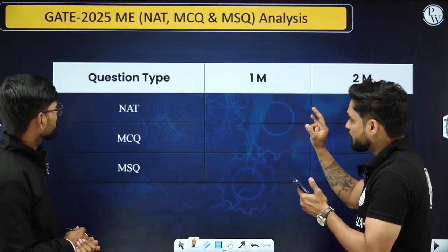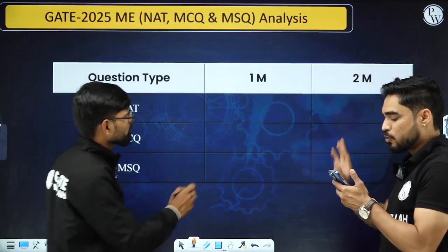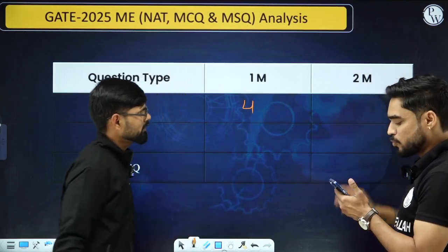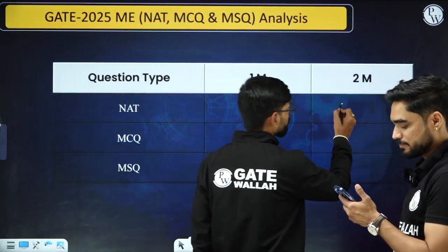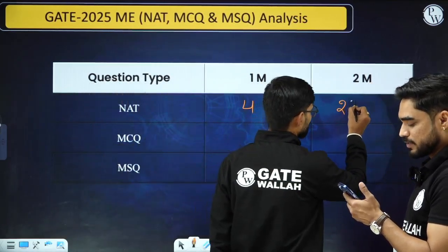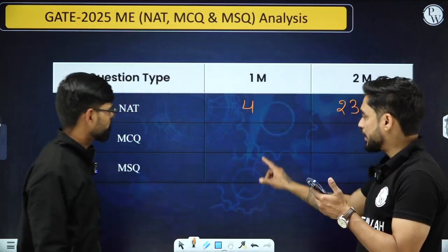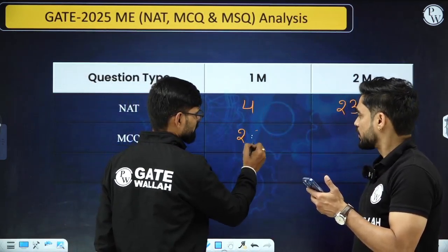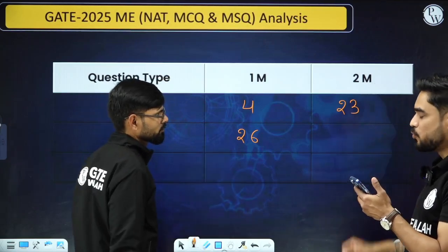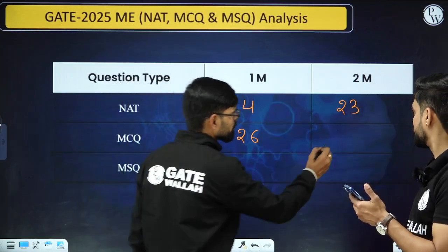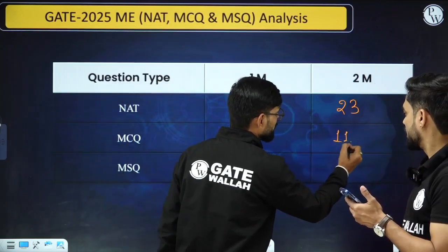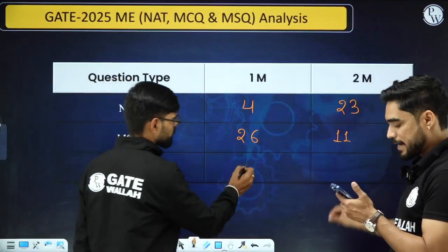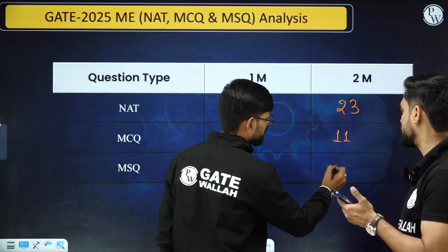From NAT, there were four one-mark questions and 23 two-mark questions. Then in MCQ, there were 26 one-mark questions and 11 two-mark questions. And MSQ had zero one-mark questions and only a single two-mark question.